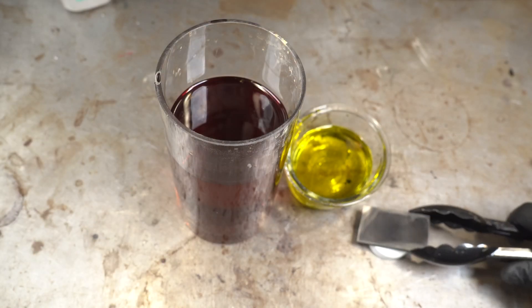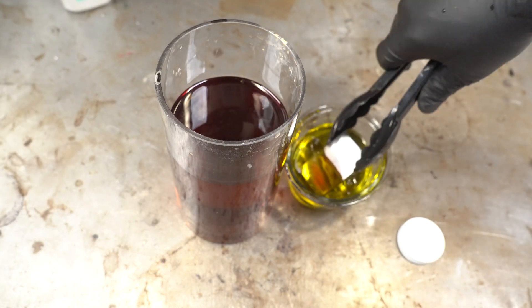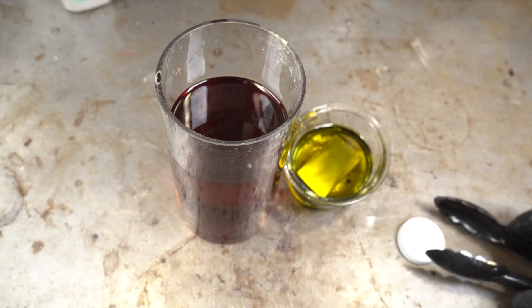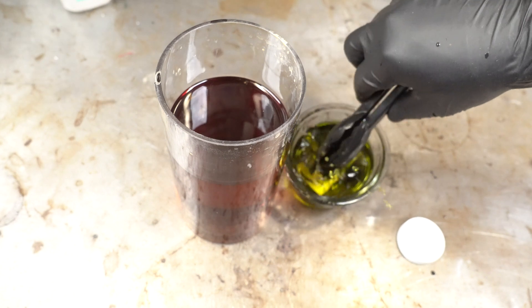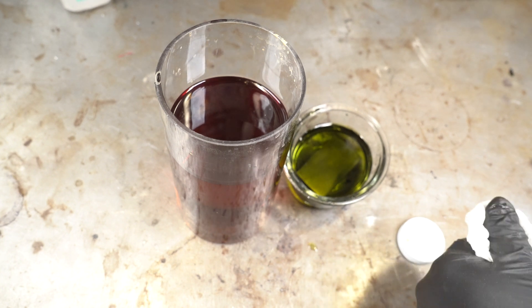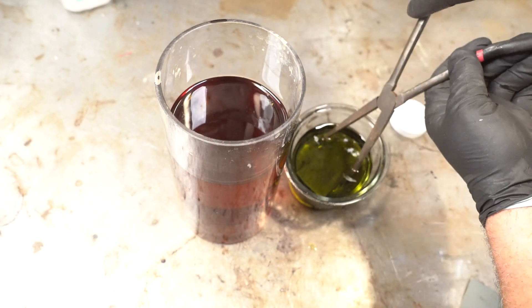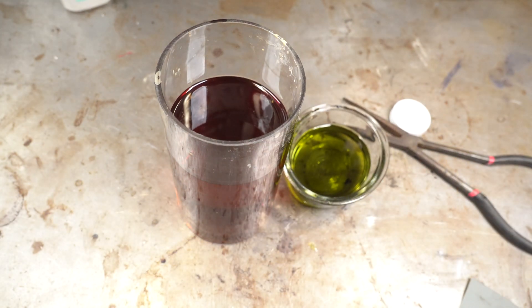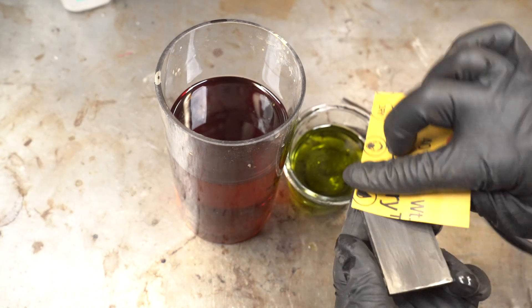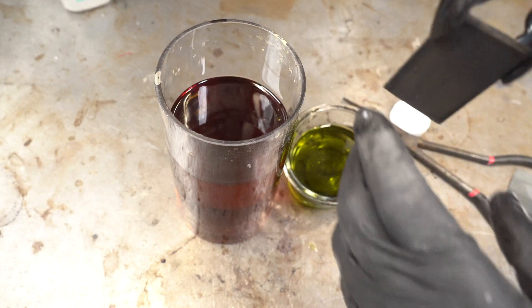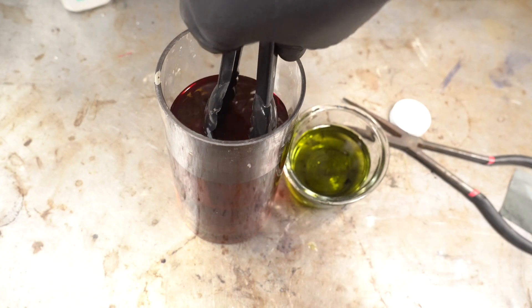Okay, first into the ferric. You'll notice how dark the ferric got because I had a little bit of the tannic acid on my tongs, so that's a good sign. And now into the tannic acid and then we're going to let it sit there for a few hours.